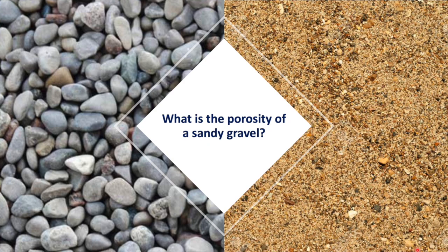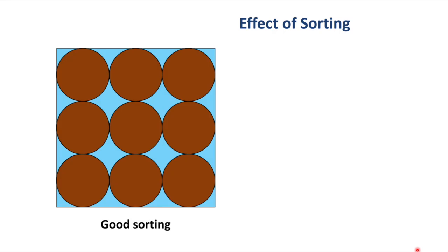What happens if we have a mixture of grain sizes? For example, what is the porosity of a sandy gravel? To understand this, we have to look at the effect of sorting on sediments. Here we have a gravel made up of perfect spheres with water filling the pore spaces, shown in blue. All the spheres are the same size, which means that the gravel is well sorted. The porosity is quite high, probably close to 50%.